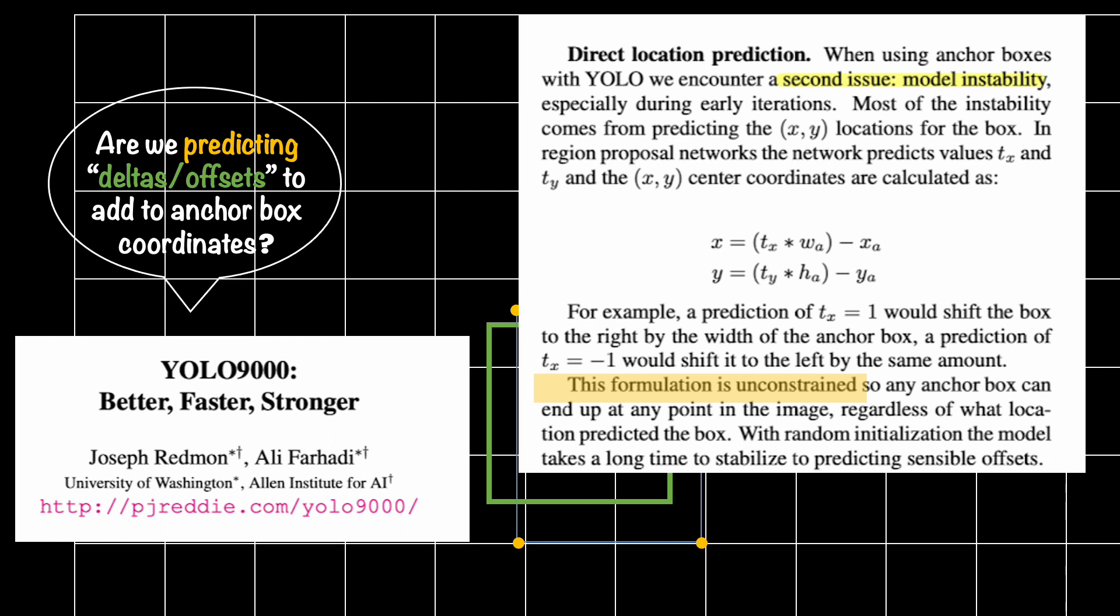The authors rightly argued that predicting the offsets for anchor boxes is an unconstrained formulation. Unconstrained here means that the offsets you will predict will take any value in the feature space and this will result in the coordinates of anchor boxes all over the place in various training iterations. Let me read the sentence as it is very clearly stated in this paper.